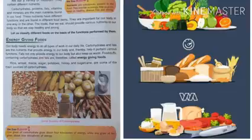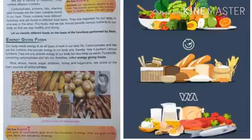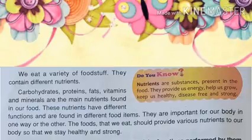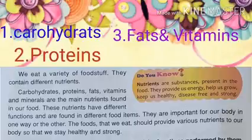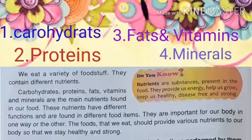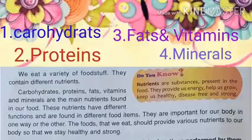Students, we eat a variety of foodstuff. They contain different nutrients. Nutrients are substances present in the food — they provide us energy, help us grow, and keep us healthy, free and strong. Carbohydrates, proteins, fats, vitamins and minerals are the main nutrients found in our food. These nutrients have different functions and are found in different food items.